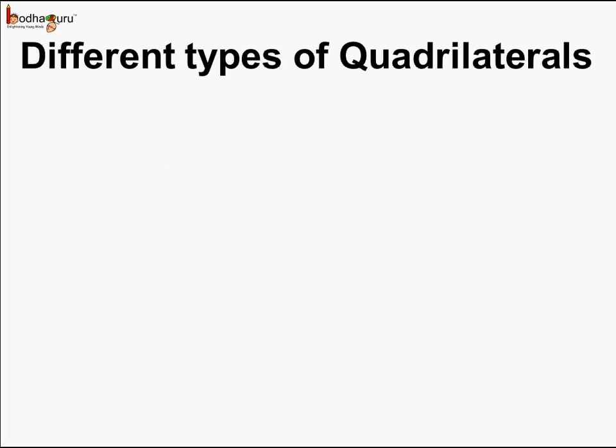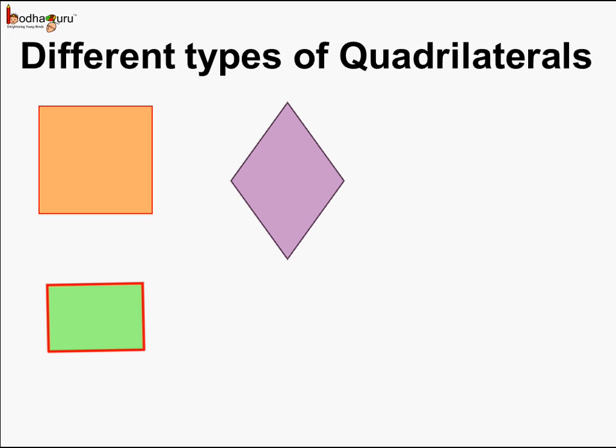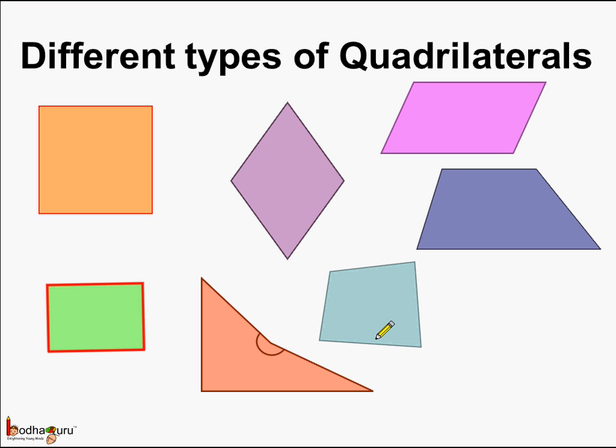Now let us see different types of quadrilaterals: the square, the rectangle, this four-sided figure, even this figure. So these are the two sides and you can say this is the fourth angle. All of these are four-sided closed figures made of four line segments. Hence all of these are different types of quadrilaterals which we will study later.